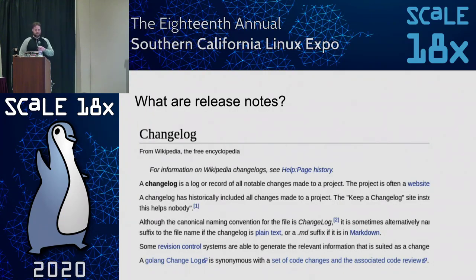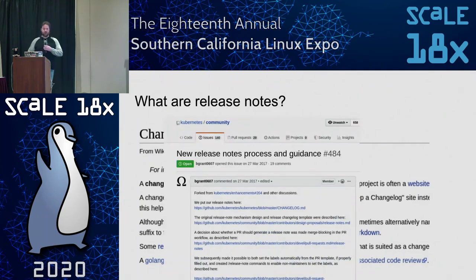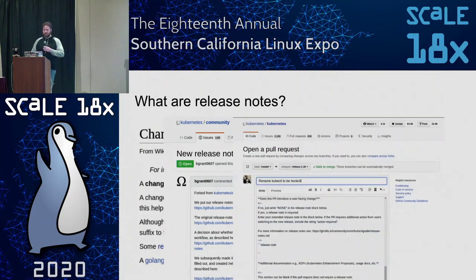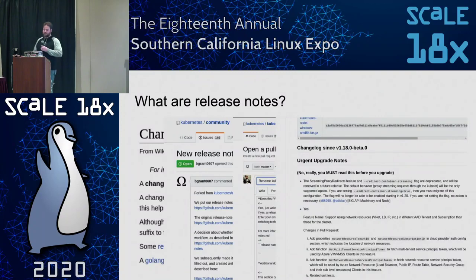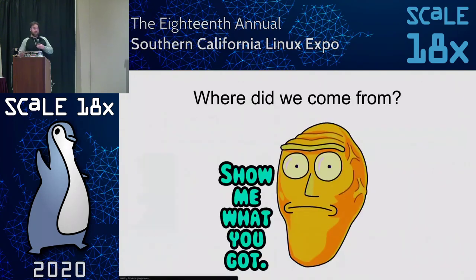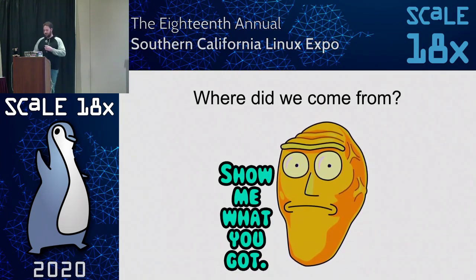Release notes are a changelog for identifying differences between version X and version Y. They're an effort by the community to inform users — inward and outward facing — of upcoming changes. They are fields added to a PR template to help automate changes, markdown published each release, and also a website. This slide became really busy because there is now a lot going on with release notes in Kubernetes.